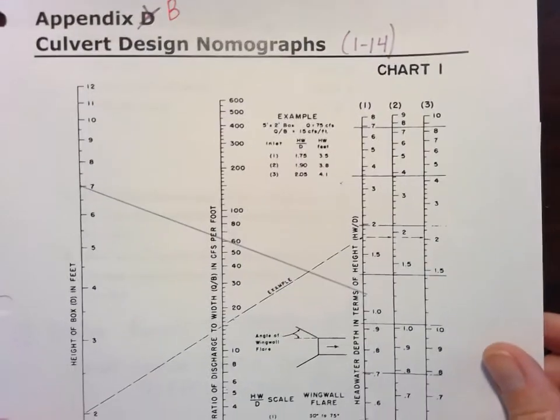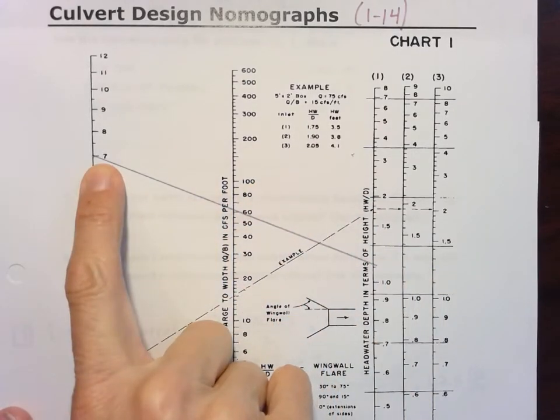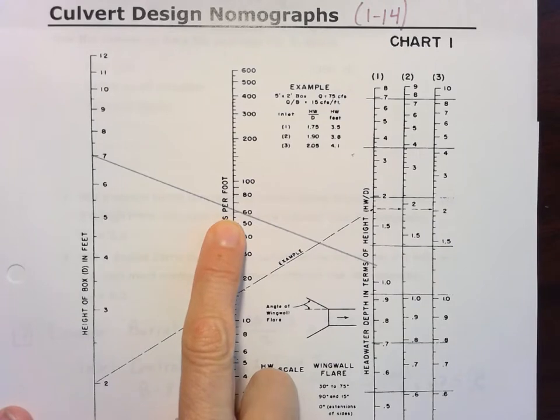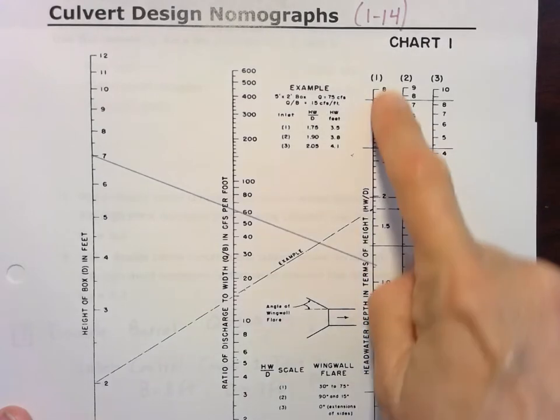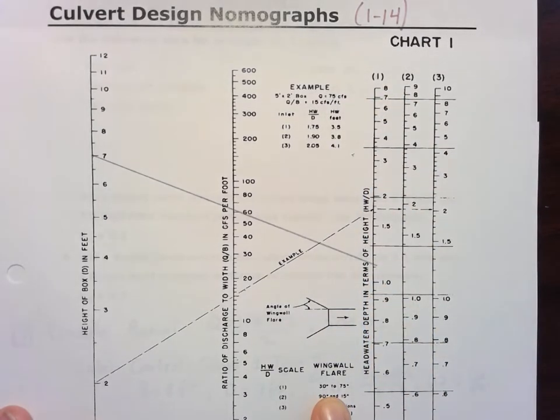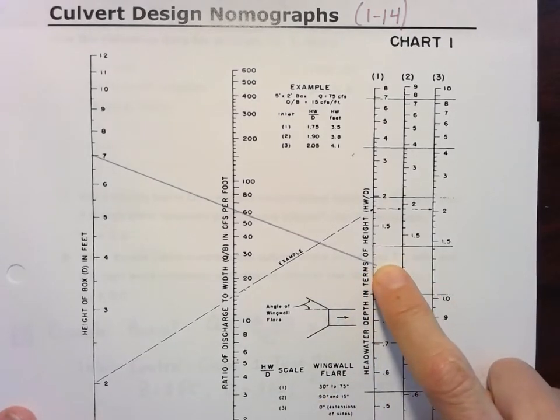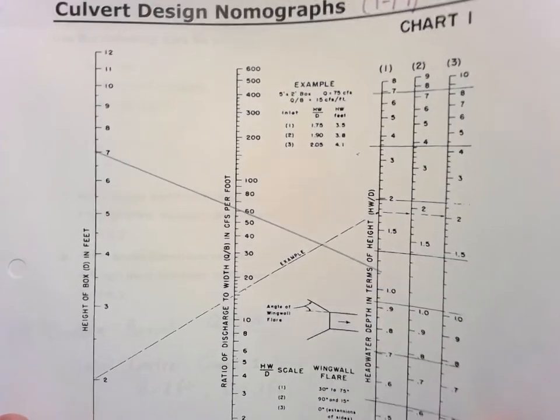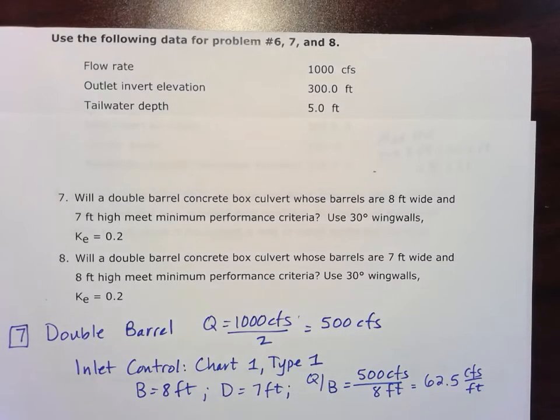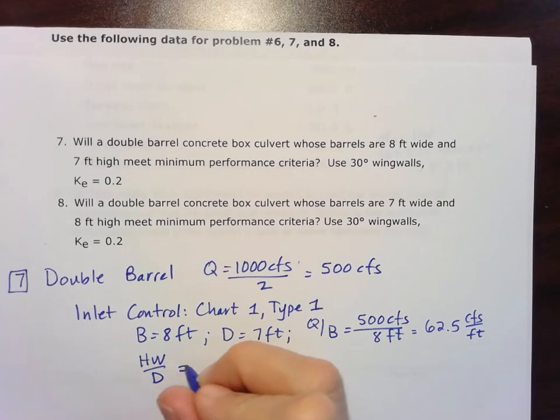So let's go ahead and take a look at where all those fall out on Chart 1, Type 1. Again, we've got the height of the box is that dimension D, and so that's our 7 feet. Our Q over B, a little bit more than 60, 62.5. And we'll go down to that first line, that first entrance for our wing wall information here, Type 1. And we can see that's just a little bit above the 1.1 mark. I'm just going to go ahead and call that HW over D equal to 1.1.